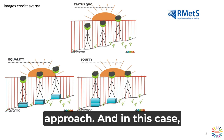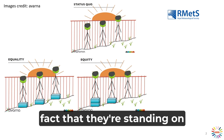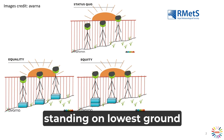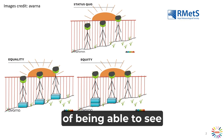Instead, we might take a more equitable approach. In this case, we are interested in what we want people to do — we want people to be able to see over the fence. To achieve that, we need to take account of the fact that they're standing on different levels of ground to start with, and give them the accommodation or adjustment they need. That means the person originally standing on the lowest ground now has two boxes, the one in the middle has one box, and the person who could already see over the fence doesn't need any support to achieve our outcome.